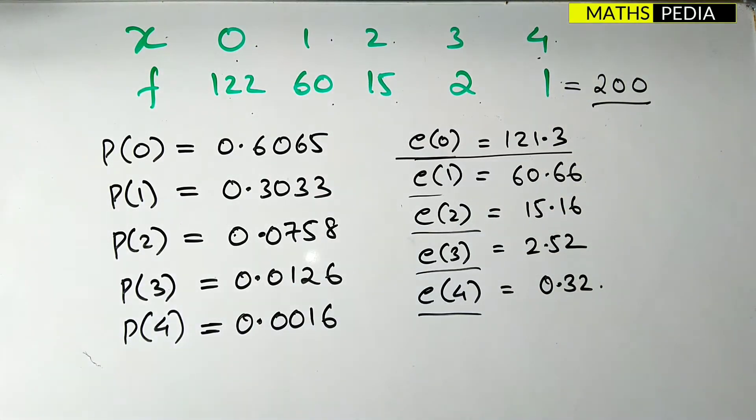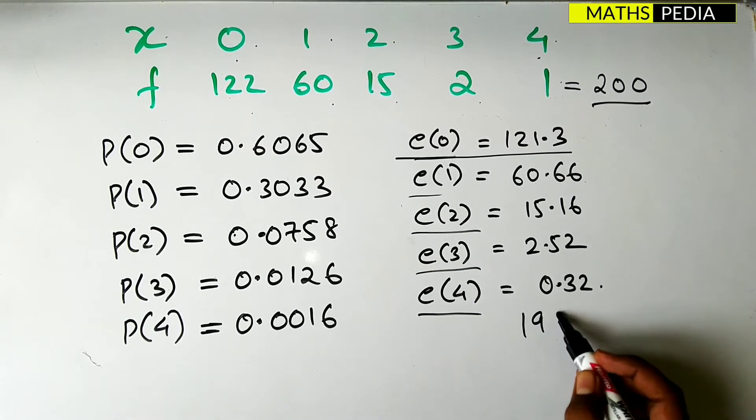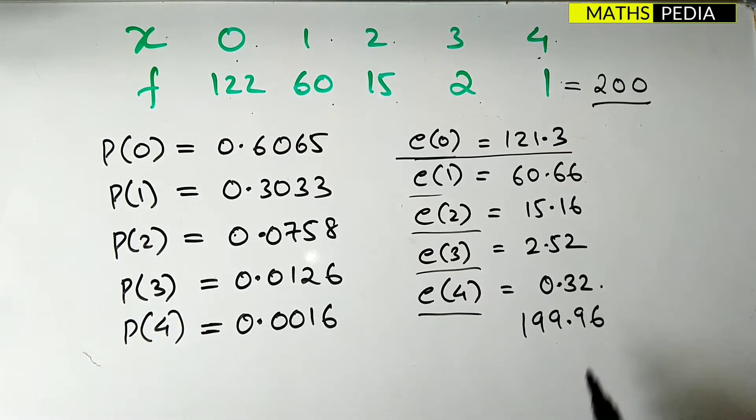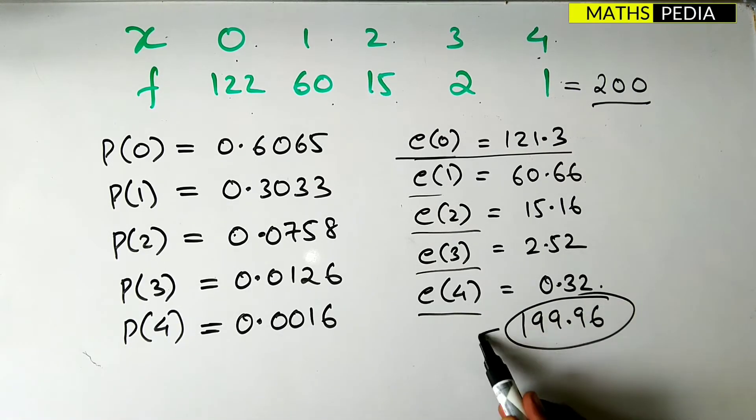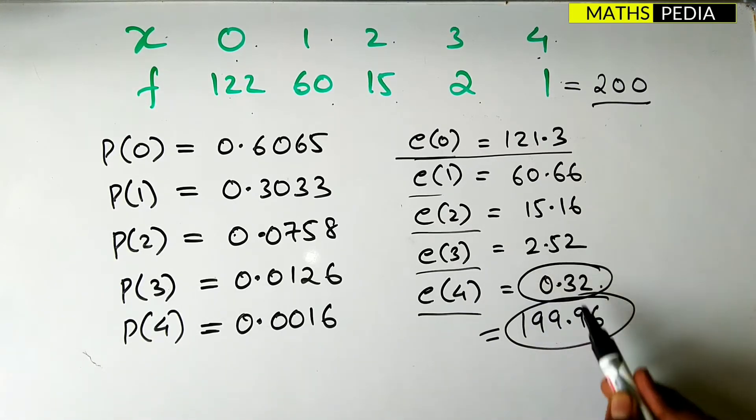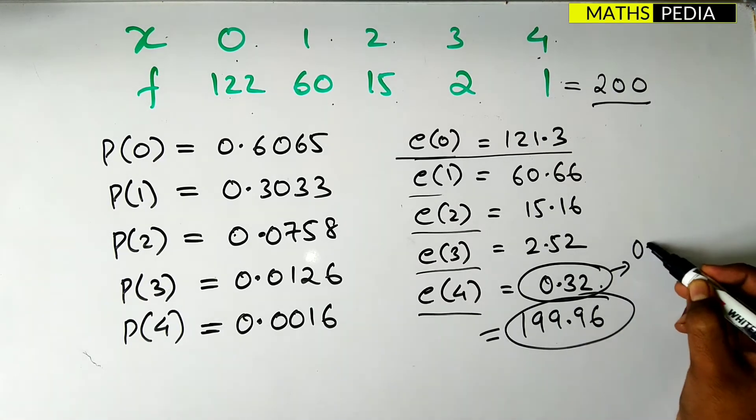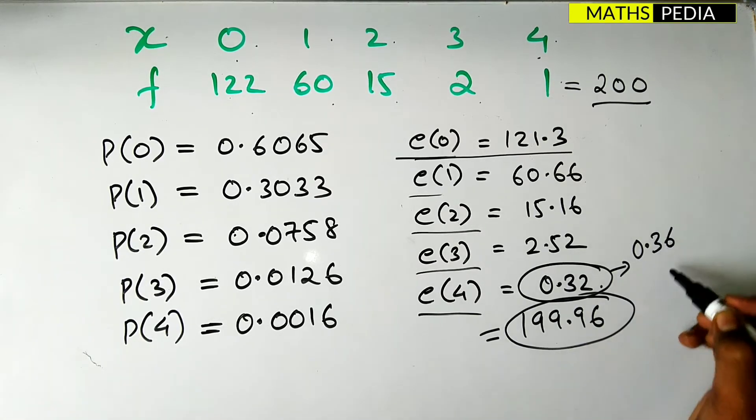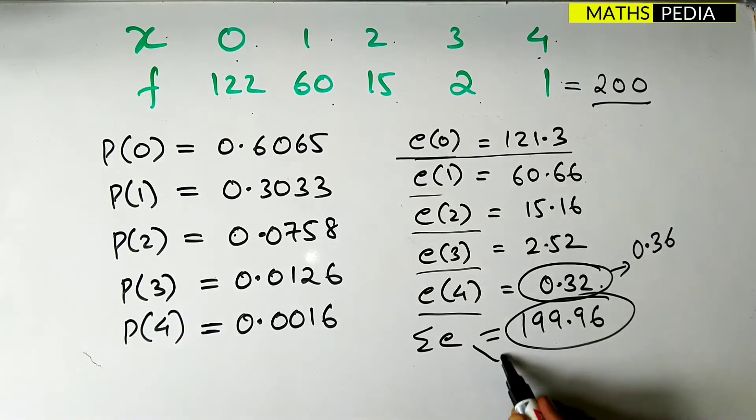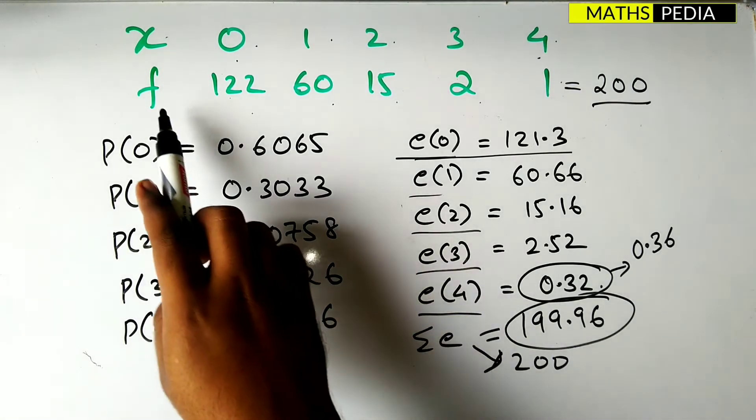Now the one more thing here is that this is all approximated value. So I was getting the value of 199.96. It was nearer to approximately it is nearer to 200. So what I did is that I have just approximated 0.32 to 0.36 in order to get the summation of e as 200.